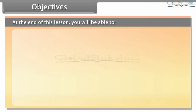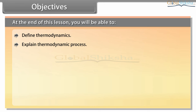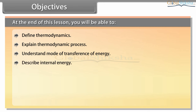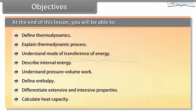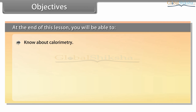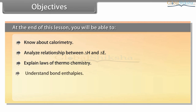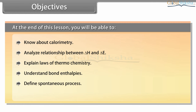At the end of this lesson, you will be able to: define thermodynamics, explain thermodynamic processes, understand modes of transference of energy, describe internal energy, understand pressure-volume work, define enthalpy, differentiate extensive and intensive properties, calculate heat capacity, know about calorimetry, analyze the relationship between ΔH and ΔE, explain laws of thermochemistry, understand bond enthalpies, define spontaneous processes, and calculate Gibbs energy.